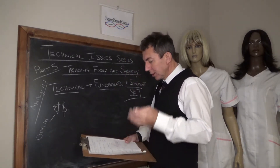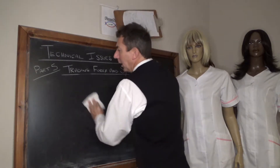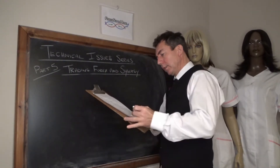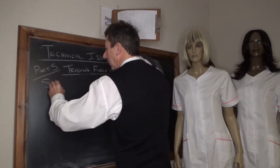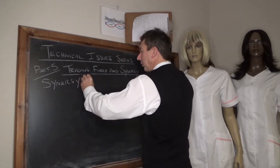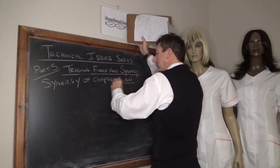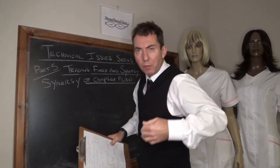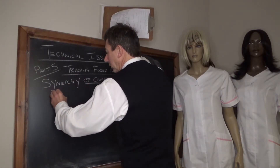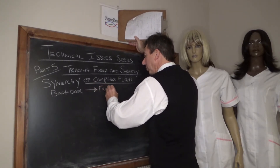That's the standard way of looking at synergy in the markets. Now I'm going to show you what we do — how we look at synergy. We look at it in terms of synergy of flows — specifically, synergy of complex flows. What we're looking for is back door flows which then become front door flows. So we're looking at back door flows which become front door primary driving flows.